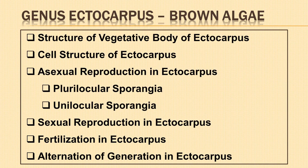In today's video we shall learn in detail about genus Ectocarpus, which is a brown alga. By the end of this video you will have a clear understanding about the vegetative body and structure of Ectocarpus, and also its mode of reproduction along with alternation of generation in its life cycle.